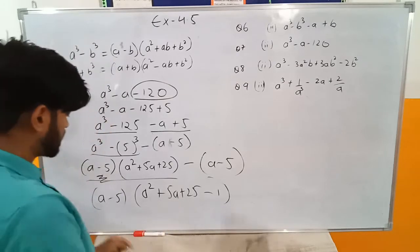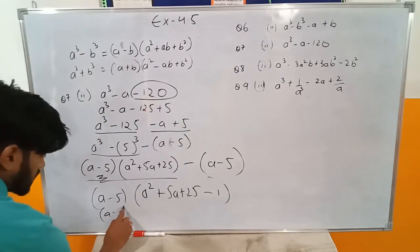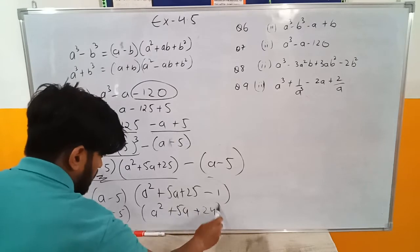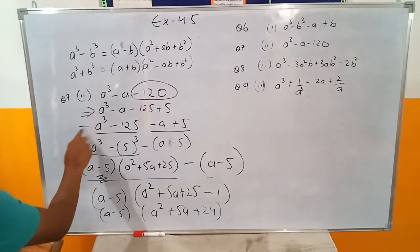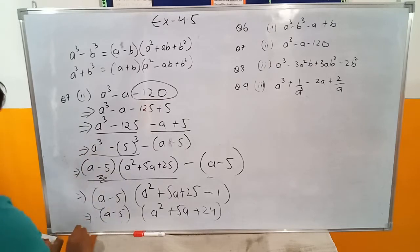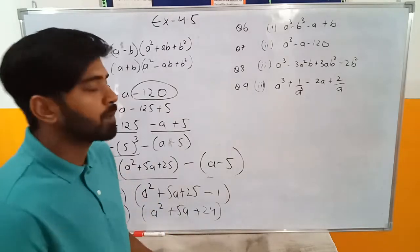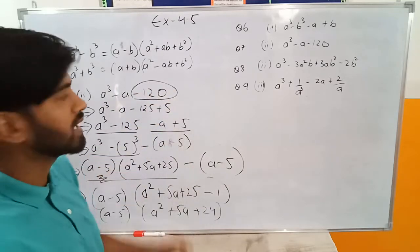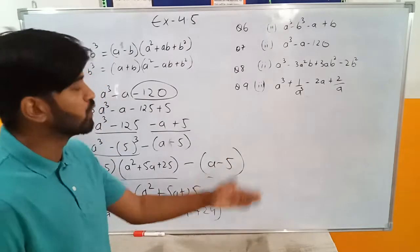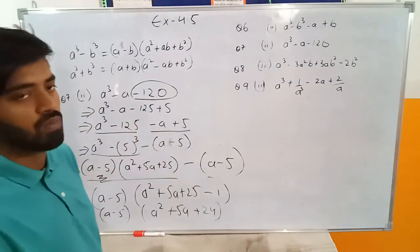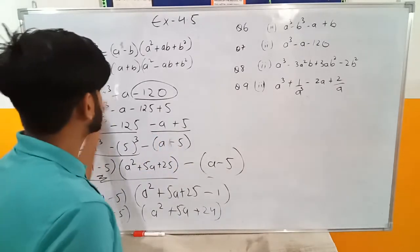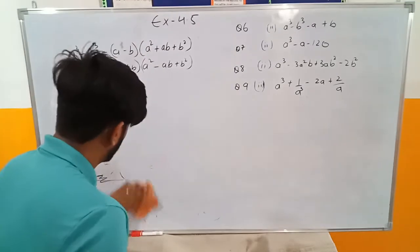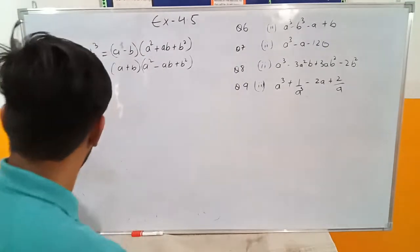After taking out a minus 5, what is left is a square plus 5a plus 25 minus 1. Collecting like terms: 25 minus 1 gives 24. So the final answer is a minus 5, bracket a square plus 5a plus 24. The key was taking the nearest perfect cube to 120, which is 125, since 5 cubed equals 125.